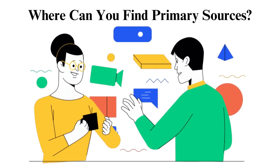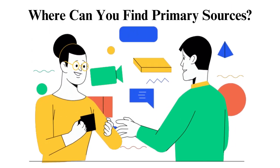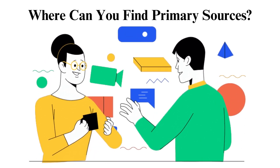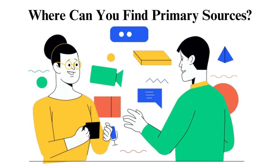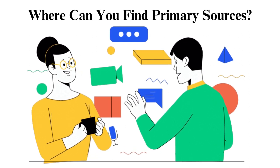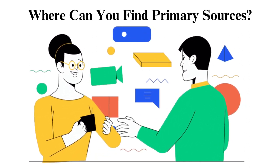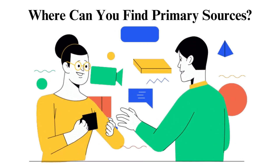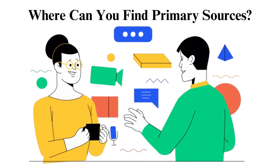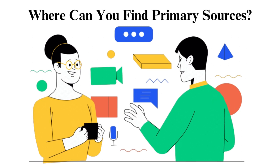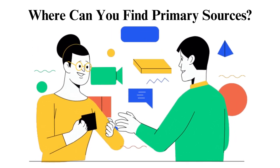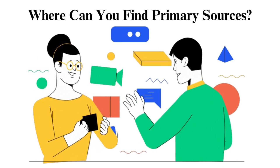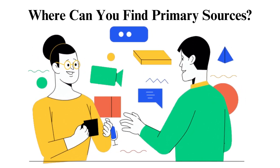Where can you find primary sources? Primary sources are often unpublished and locating them can be hard. However, some resources can help you. On the web, you can search the internet for your research topic by adding phrases that will bring primary source results — for instance, adding 'primary sources' or 'letters.' Project Gutenberg: if you are working on a literature assignment and need the original literature, Project Gutenberg will assist you in acquiring more information on these sources.